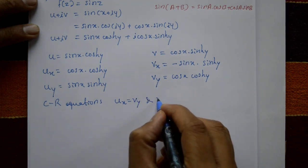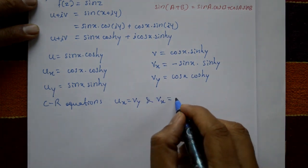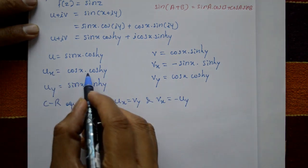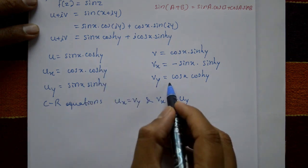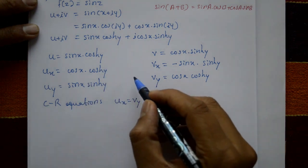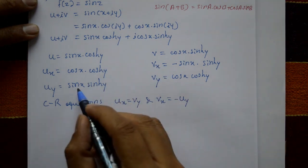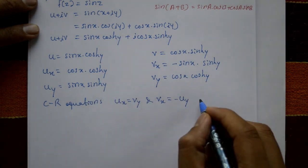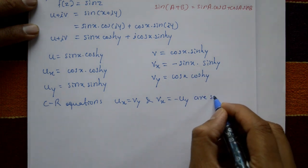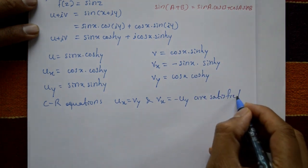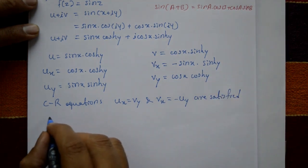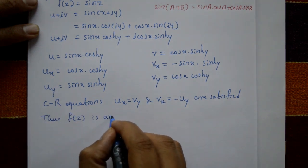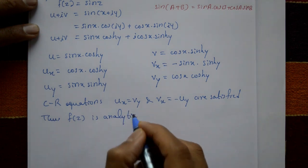We see that ∂u/∂x equals ∂v/∂y — these two equations are the same. And ∂v/∂x equals minus ∂u/∂y — the minus sign on one side matches. The Cauchy-Riemann equations are satisfied, and thus f of z is analytic.